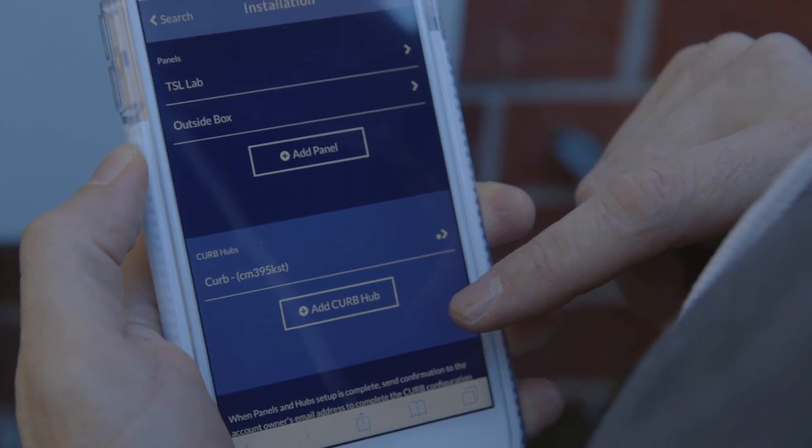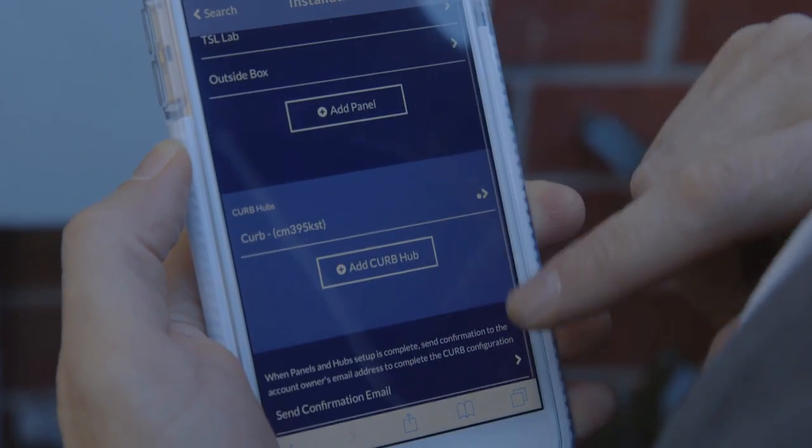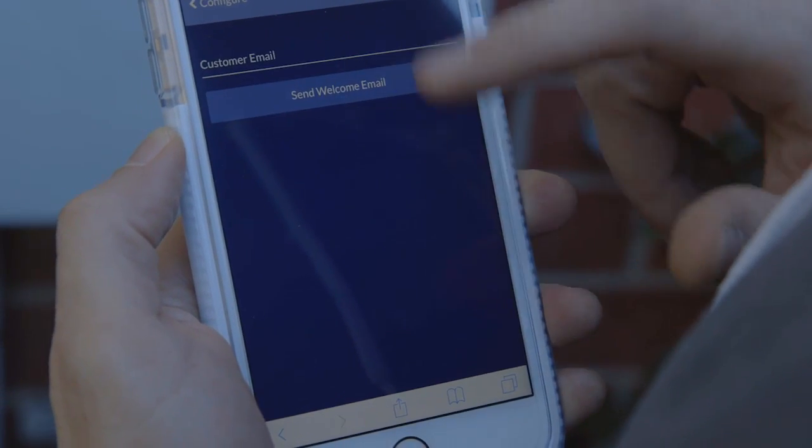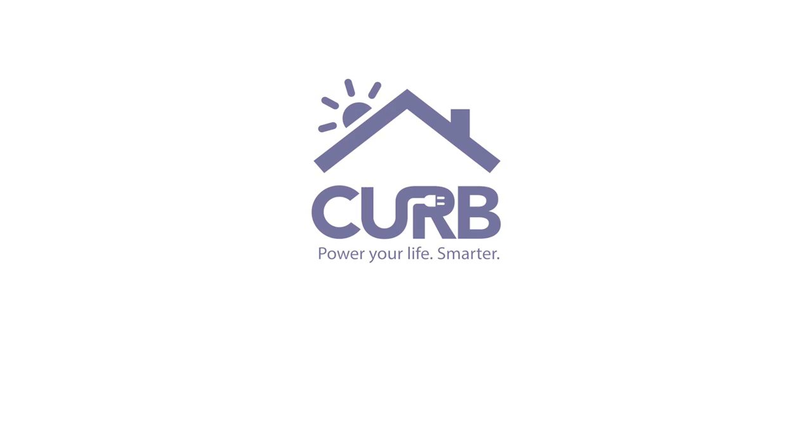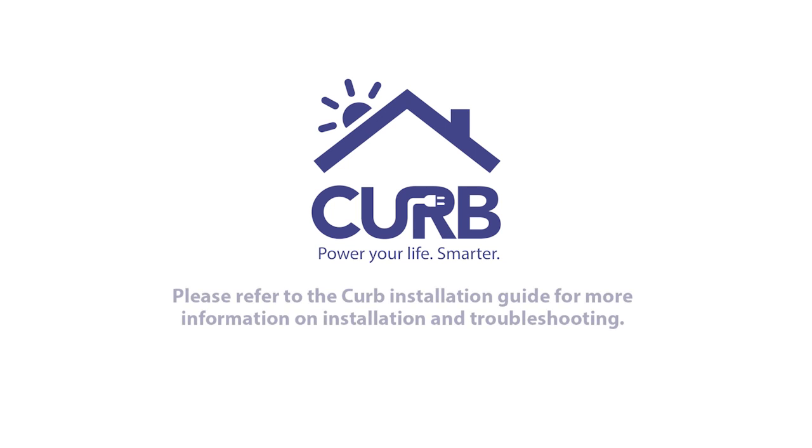After configuring all panels and hubs, tap back to the installation page, select send customer email, and enter the customer info. Make sure the customer receives the welcome email and tell them to create a new account to begin using Curb. That's it! Thanks for helping another homeowner power their life smarter.